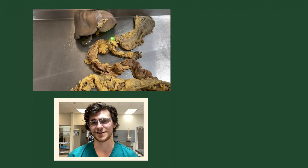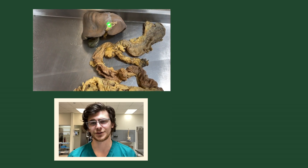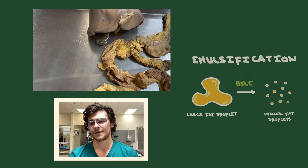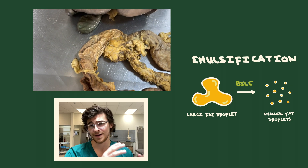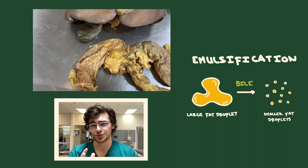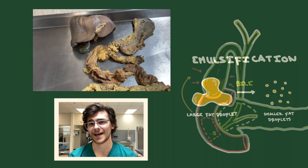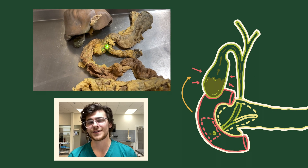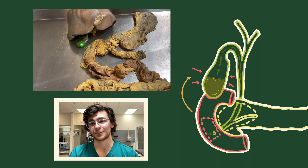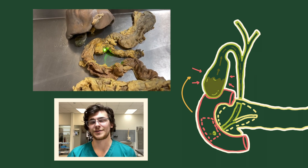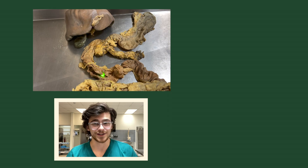The gallbladder serves as a storage and concentration center for excess bile created by the liver. Bile acts as an emulsifier, meaning it breaks down large fat droplets into smaller drops that enzymes like lipases can more adequately handle. When food is sensed in the duodenum, the gallbladder is signaled to contract, sending bile down to the ampulla of Vater to aid in the digestive process.